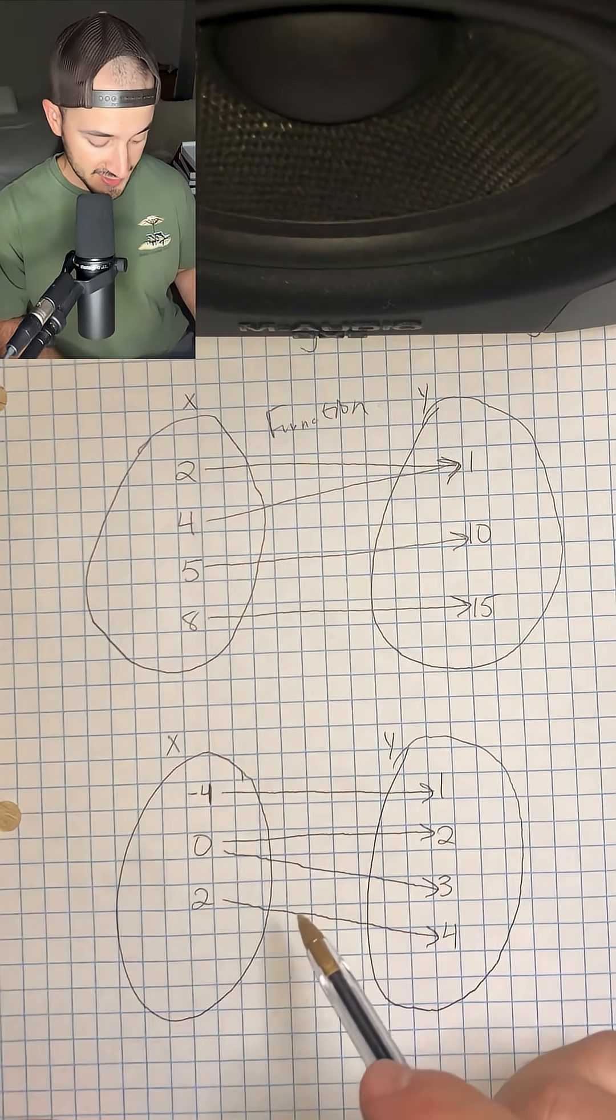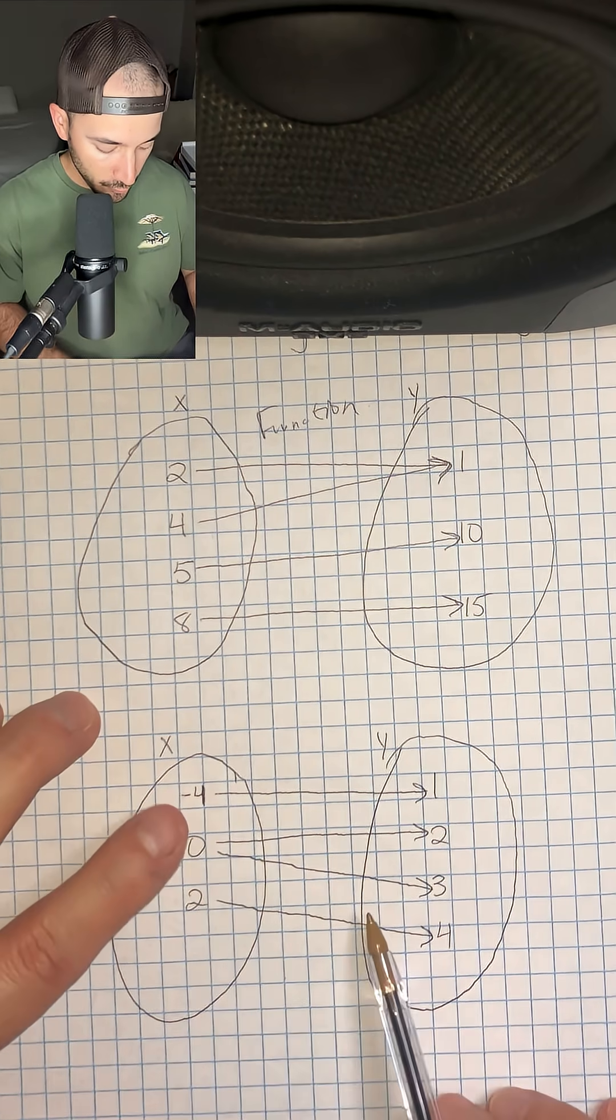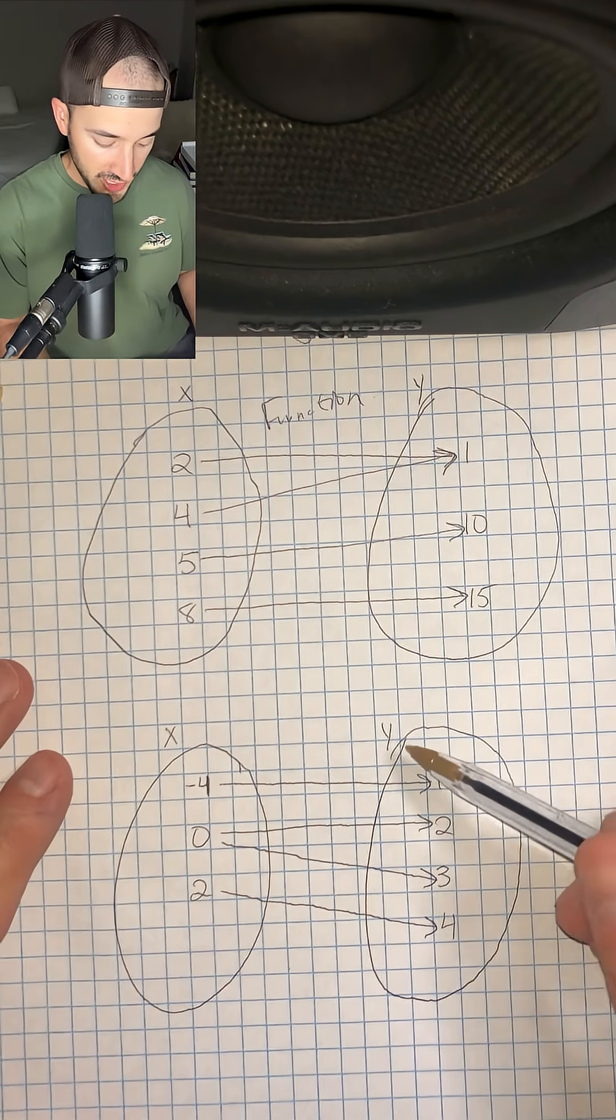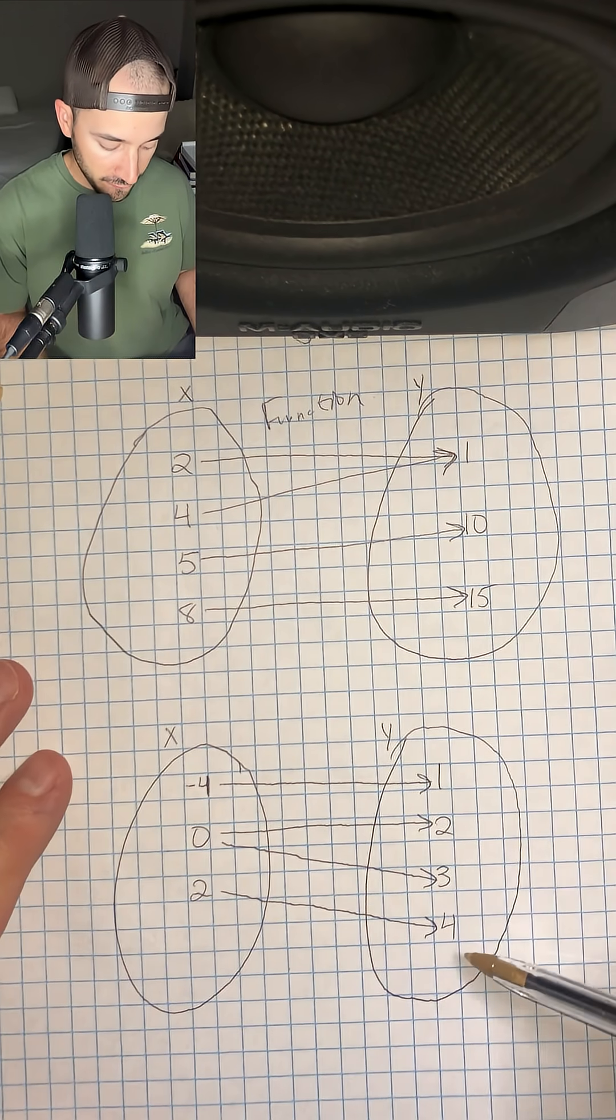Now let's look at a second example. This time we have x values of negative four, zero, and two, and we have y values of one, two, three, and four.